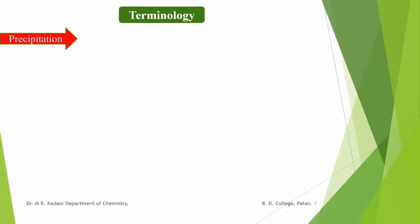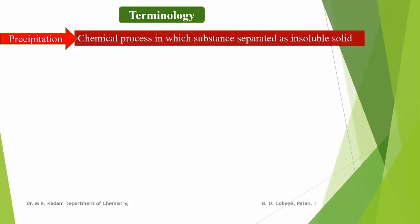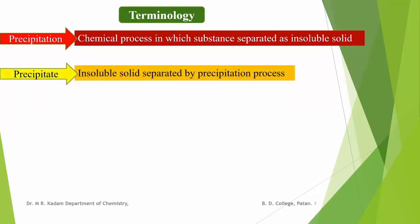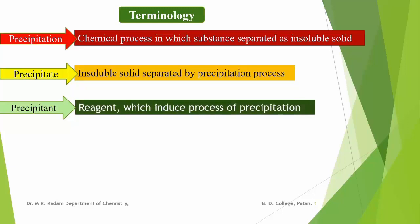To understand the gravimetric analysis, some terms are essential. The first term is precipitation. It is defined as the chemical process in which a substance is separated as an insoluble solid from the solution by the addition of a precipitant. The second term is precipitate. It is defined as an insoluble solid separated by the precipitation process from the solution. Third, precipitant: it is a chemical reagent which induces the process of precipitation.